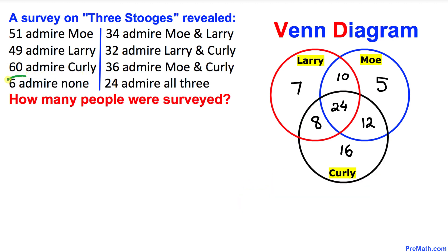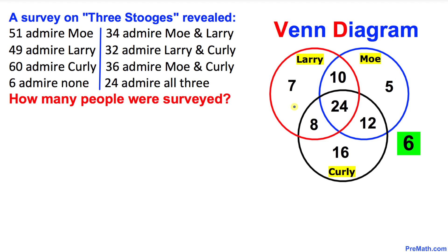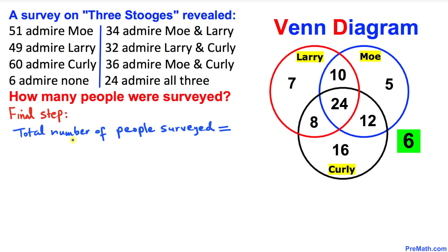Finally, let's focus on the 6 people that do not admire any of them. Since they don't belong to any circle, we write 6 outside all the circles. Here's our completed, much nicer-looking diagram.